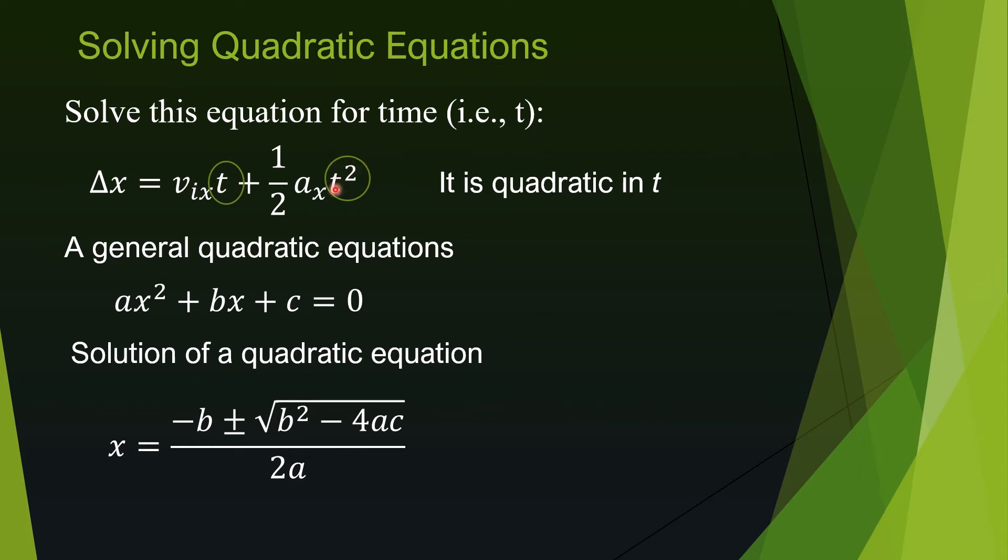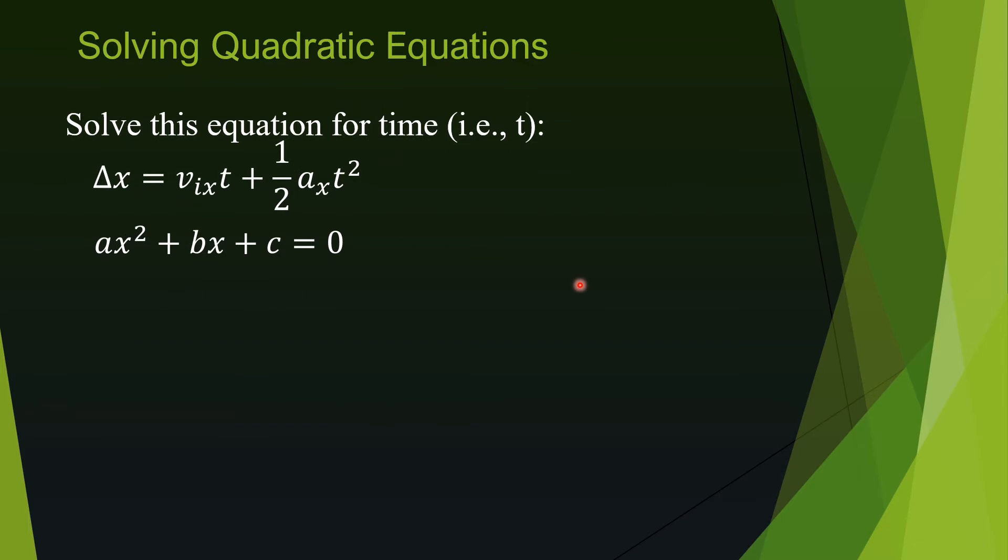We can use this formula to solve our equation for t. T in our equation is acting like x in this general quadratic equation. Our equation does not look exactly like this general quadratic equation, so we need to rewrite our equation so that it looks like this.